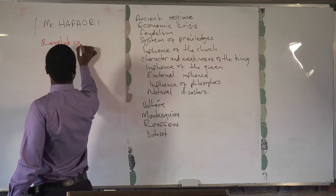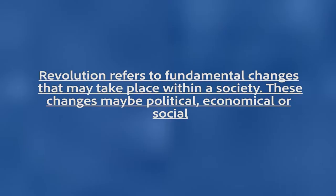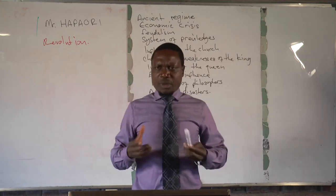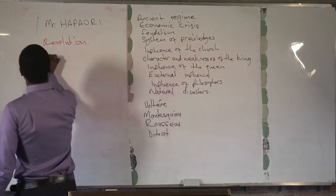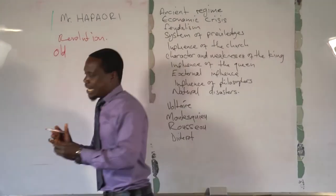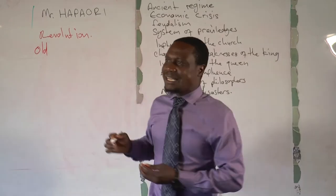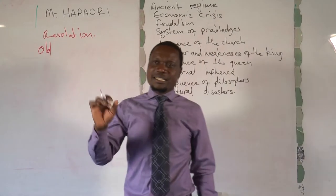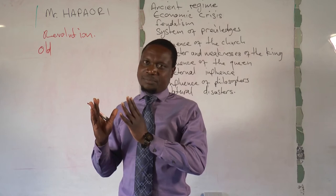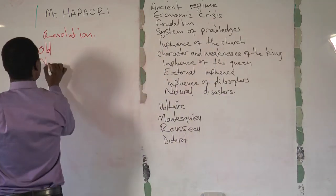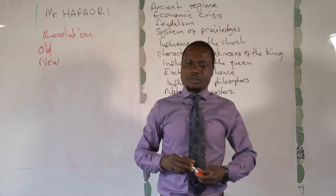Let's start by defining the term revolution. What is a revolution? A revolution refers to fundamental changes that may take place within a society. These changes may be political, economic, or social. Two things are always obvious in a revolutionary environment: the first is that the old order within the society experiencing a revolution is shaped, and the second is that new elements are introduced into that society.